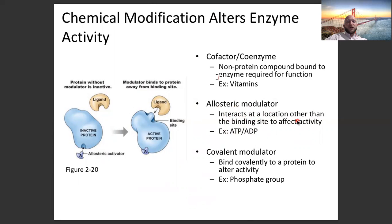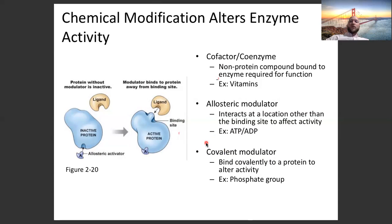Here's an example of an allosteric modifier. We have an inactive protein. If we're low in ATP, we have a lot of ADP. ADP is likely to bind to this inactive protein and turn it into an active protein, which allows the ligand to bind. In this hypothetical situation, that will increase the rate at which ATP is made. Covalent modulators bind covalently to a protein to alter activity. All of these — cofactors, allosteric modifiers, covalent modifiers — might increase or decrease the reaction rate.